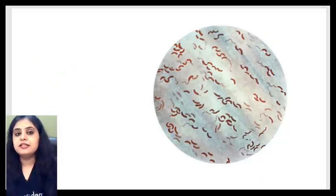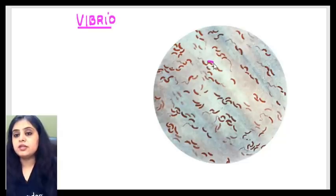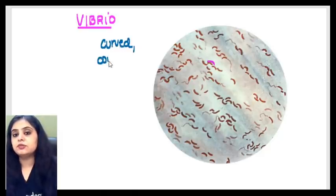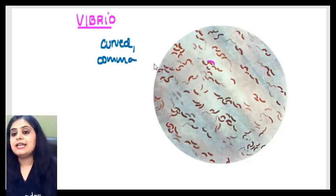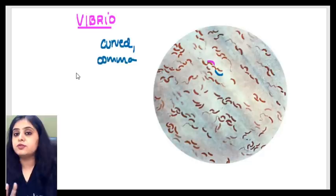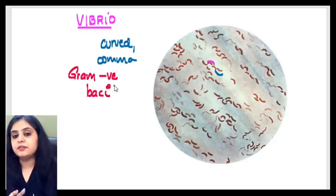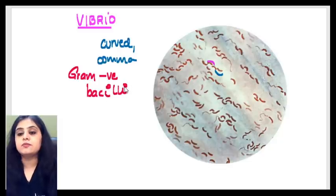The first one tells us that Vibrio as an organism, if you see the staining characteristics, this is going to be a comma-shaped organism. So we say that number one, it is curved. Apart from being curved, they also sometimes call it comma-shaped and it is having that reddish color. So it's definitely not gram positive. Positive would have been purple. This is a gram-negative bacilli, curved, comma-shaped bacillus because it's elongated.